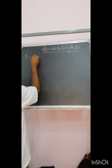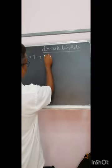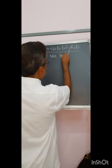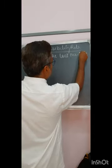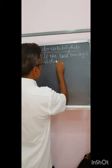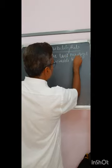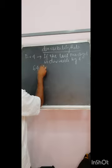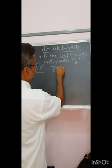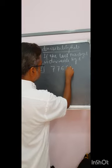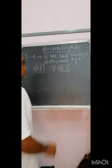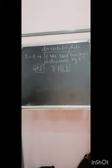Divisibility by four: it can be detected if the last two digits of the number are divisible by four. That means if the last two digits are, say, 68, it would be divisible by four. If the last two digits are divisible by four, then the number is divisible by four.